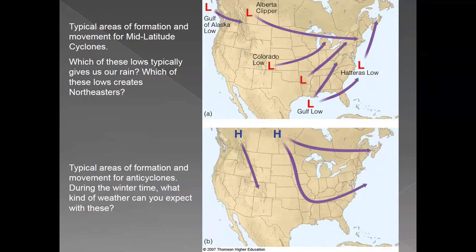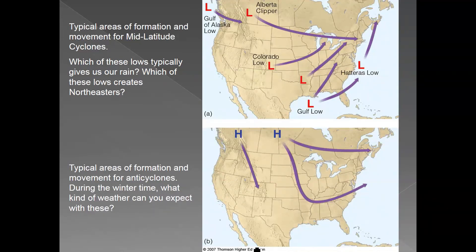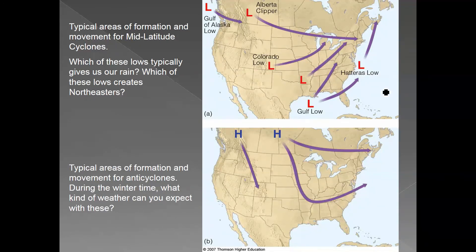Gulf of Alaska lows give us our rain. Colorado lows actually create severe weather and tornadoes over Tornado Alley, which we'll talk about in the next module. Gulf of Alaska lows and Hatteras lows are what create nor'easters, and we'll talk more about those in a couple of modules. Most high-pressure systems form over interior Canada and then travel down into the United States, creating very cold, very stable weather. These lows usually create very stormy weather.